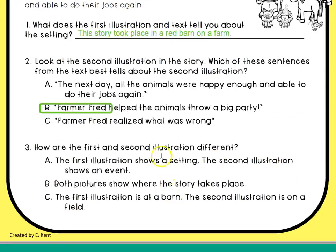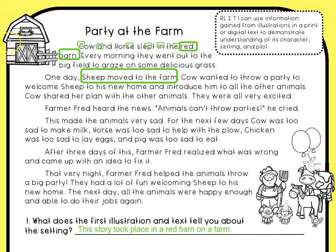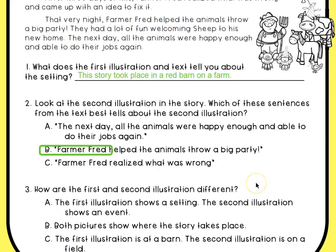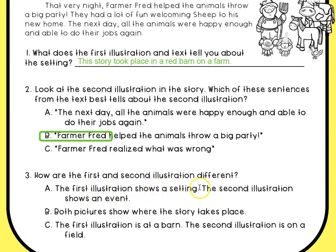How are the first and second illustrations different? The first is the barn; the second is the animals with Farmer Fred. The first illustration shows the setting. The second illustration shows an event. Both pictures show where the story takes place — sort of. The first illustration is at a barn; the second illustration is on a field, though I'm not sure for sure they're in a field. The best answer is: the first illustration shows the setting, and the second illustration shows an event.